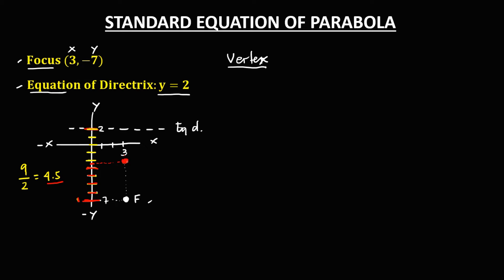This is now the point of the vertex. To find the coordinate of the vertex: x is positive 3. For y, since we counted down to negative 2.5, that is 2 and 1 half. Converting to an improper fraction: 2 times 2 is 4, and 4 plus 1 is 5, so that is 5 over 2. Therefore y is negative 5 over 2. This is now the coordinate of the vertex.